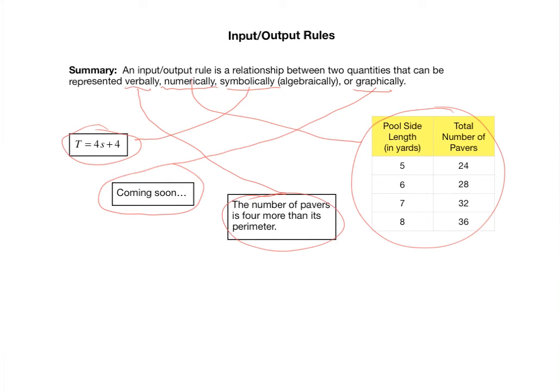These are four different ways of representing the exact same rule. Again, this one, the graphical representation, we haven't seen it all yet, that is coming soon. Our objective is to approach input-output rules from four different perspectives. By understanding an input-output rule from four different perspectives—verbally, numerically, symbolically, and graphically—you'll have a much better understanding of the rule itself. Let's now look at another example.